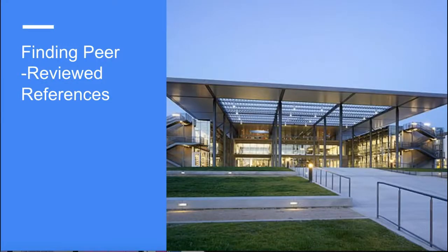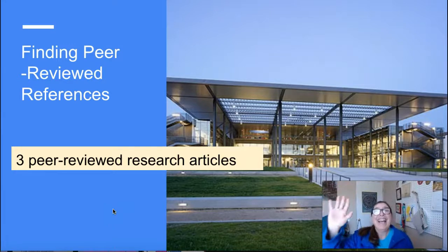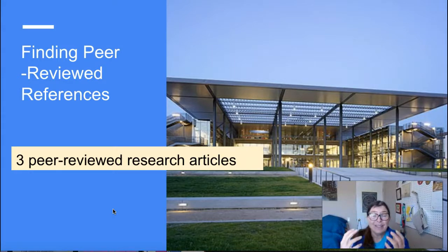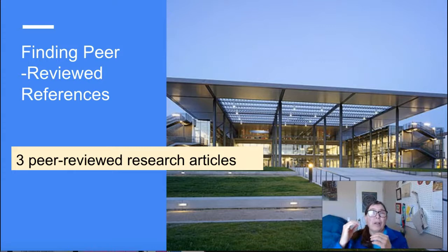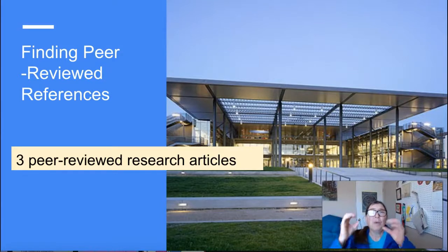So what is our goal here when we're finding peer-reviewed references? For this project we want to find three peer-reviewed research articles — that means three articles where you can see a clear method section and a clear results section. We're not looking for analysis of your topic or reviews of other research. We're looking for real research where the authors have actually done the research, whether it's a lab experiment, a survey study, or some other kind of clinical study, with methods and results clearly visible.